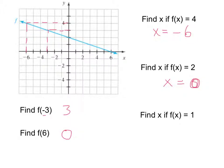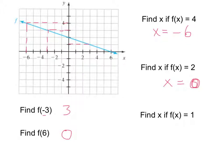And for the next one, find x if f of x equals 1. Again, the 1 is the output or y-coordinate. We find 1 on the y-axis, go over to touch the graph, and see that x equals 3.